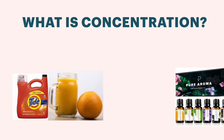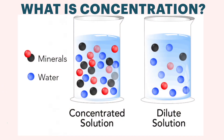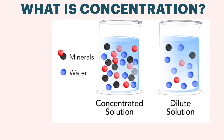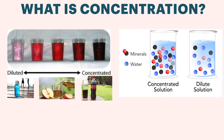Think of it this way: a concentrated solution has a lot of minerals in water, while a diluted solution doesn't have as many. One way to simplify this is to compare pop to water. Coca-Cola is highly concentrated — it has syrup, higher viscosity, and a lot more sugar. Apple juice is kind of in the middle, between diluted and concentrated. Clear water has very few solutes and is the most diluted.